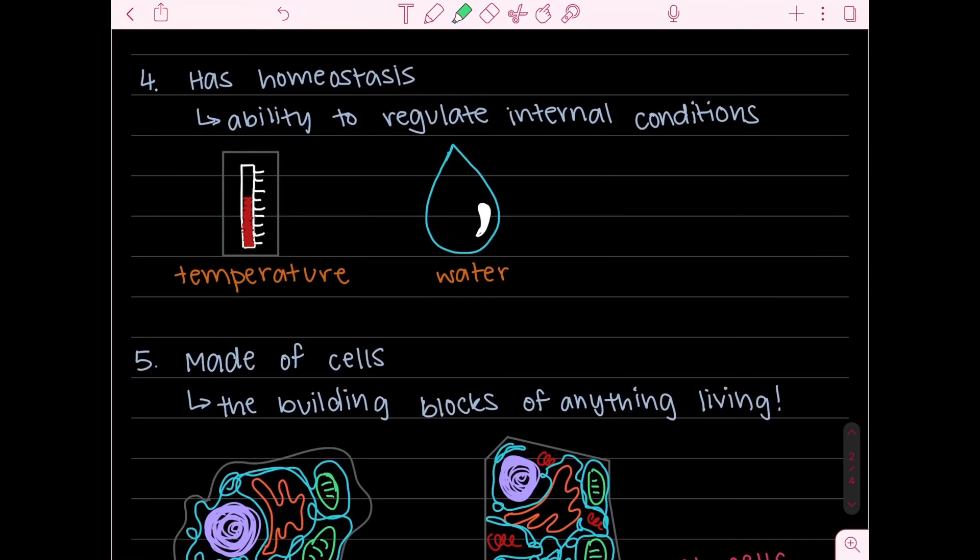Our fourth characteristic is that the organism has to have homeostasis. And we went over this in the last video so if you're not quite sure about it still you can watch that video and then come back to this one. But homeostasis in short is the ability to regulate internal conditions.